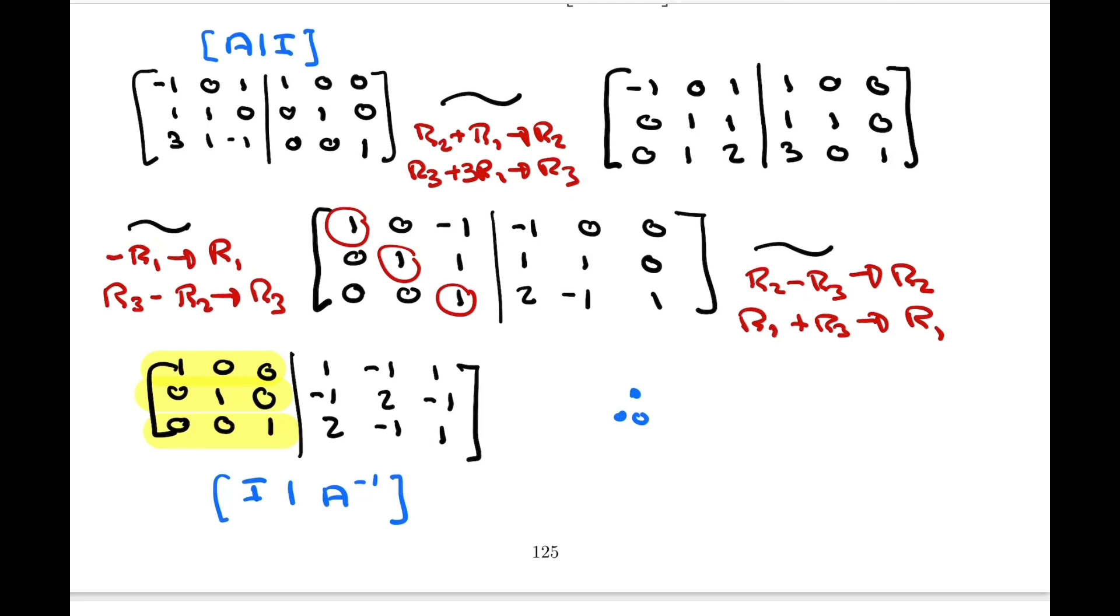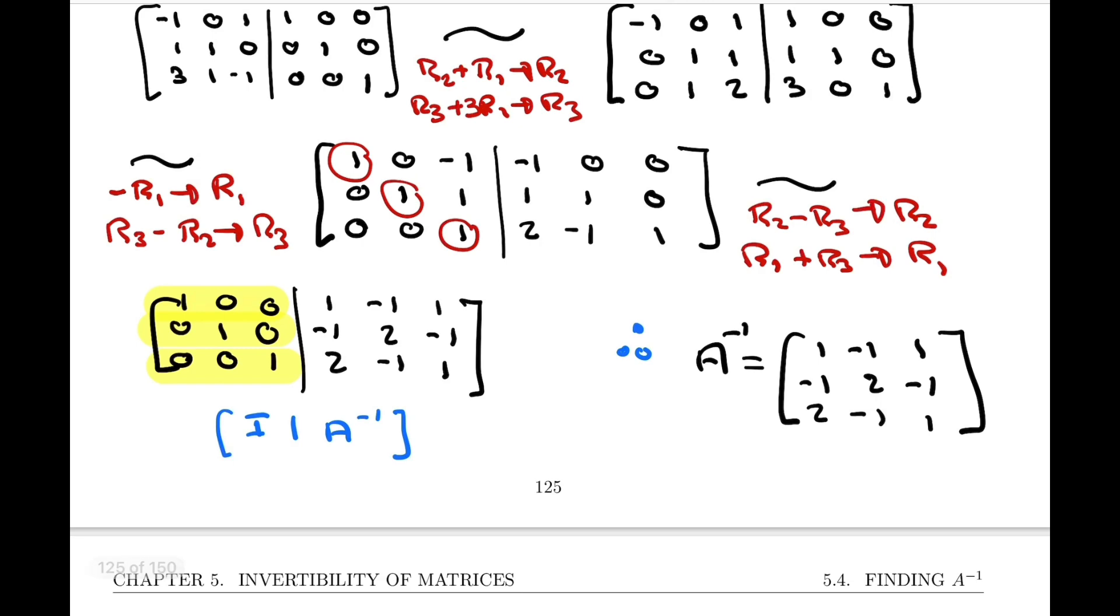That allows me to state that the inverse matrix is the matrix that we got in the last three columns, which are 1, minus 1, 1, minus 1, 2, minus 1, and negative 1, 2, 1. And that, we claim, is the inverse.